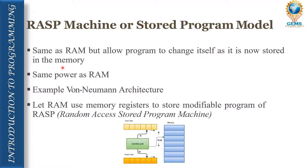RASP stands for Random Access Stored Program Machine. It is the same as a random access machine but allows the program to change itself since it is stored in memory. The von Neumann architecture is one of the best examples of RASP. Here is the diagram for the random access machine.